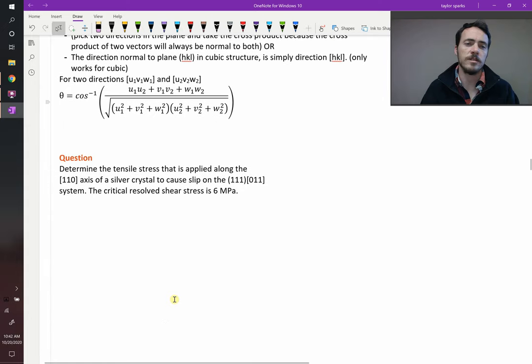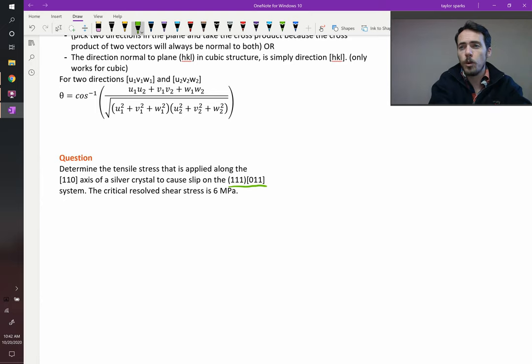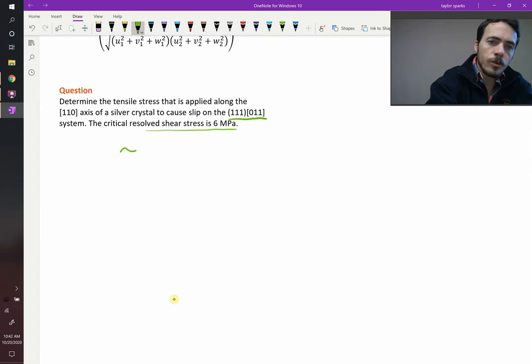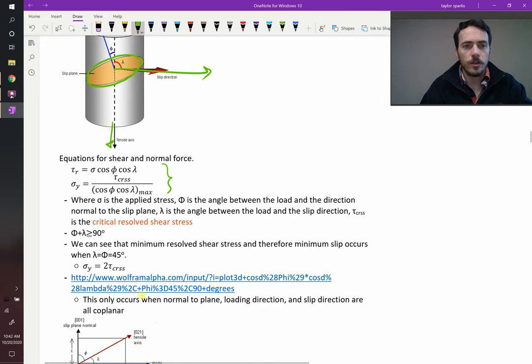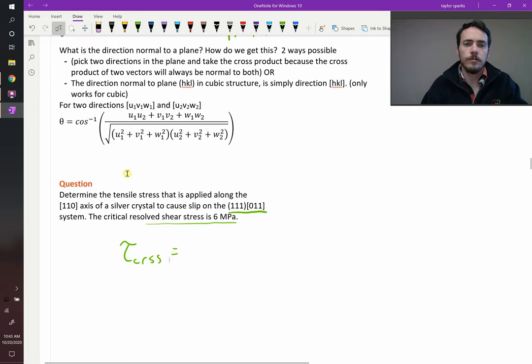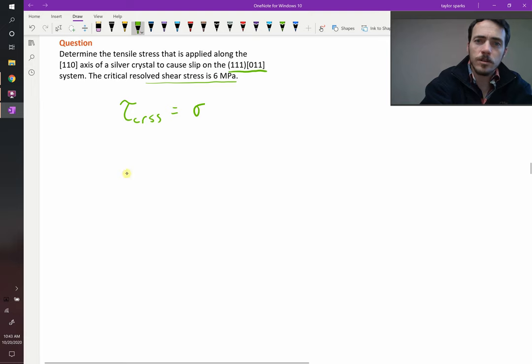So let's put this all together with this example. It says, determine the tensile stress that is applied along the [1-1-0] direction of a silver crystal to cause slip on this slip system. You're going to be on the (1-1-1) plane in the [0-1-1] direction. The critical resolved shear stress for this crystal is 6 megapascals. All right, so let's do this one. We know that the critical resolved shear stress is equal to the stress that you apply to the crystal times cosine of phi and the cosine of lambda.